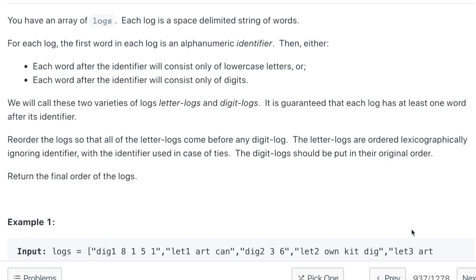Question says you have an array of logs. Each log is a space delimited string of words. For each log, the first word in each log is an alphanumeric identifier. Then either each word after the identifier will consist only of lowercase letters or...